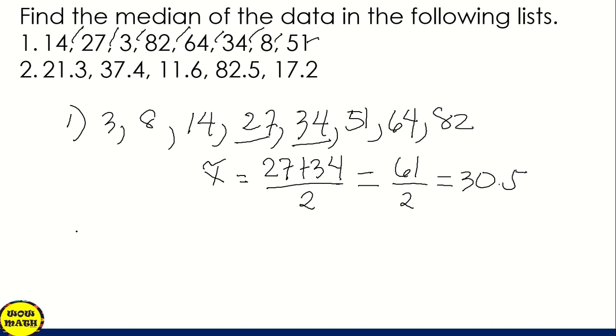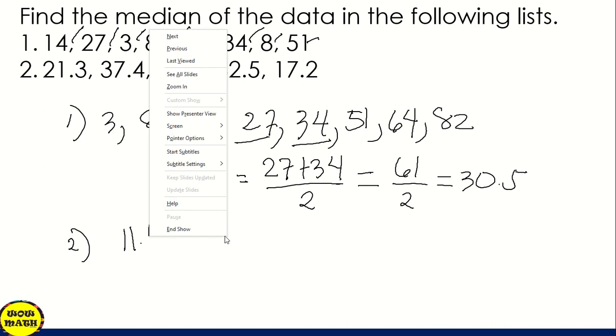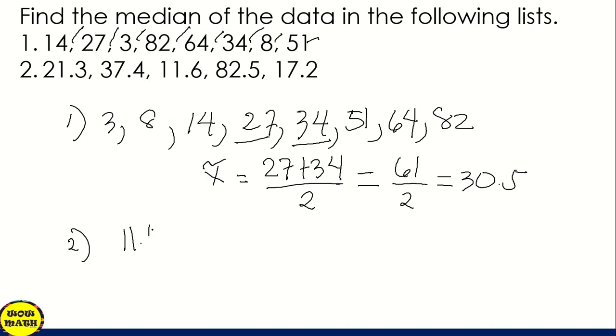Next, for number 2. So arrange them. What's the lowest? 11.6. We have 11.6. And then we have 17.2, 21.3, and then 37.4, and 82.5.